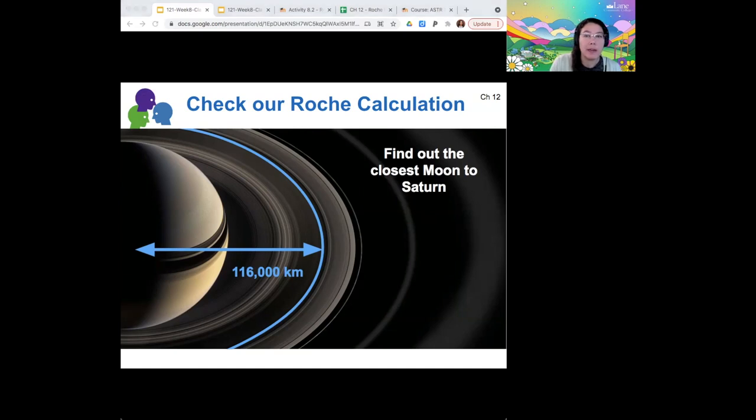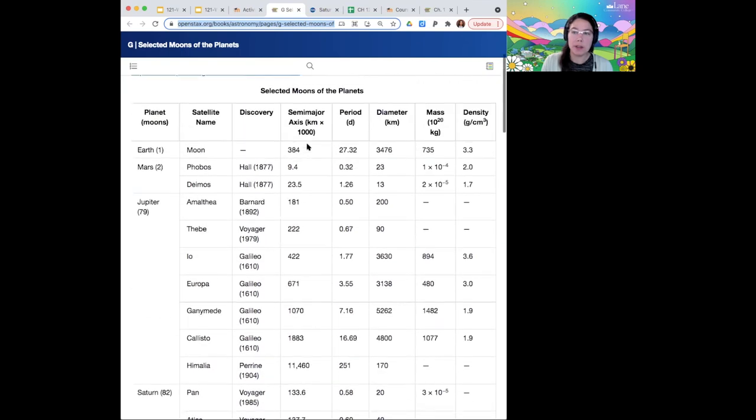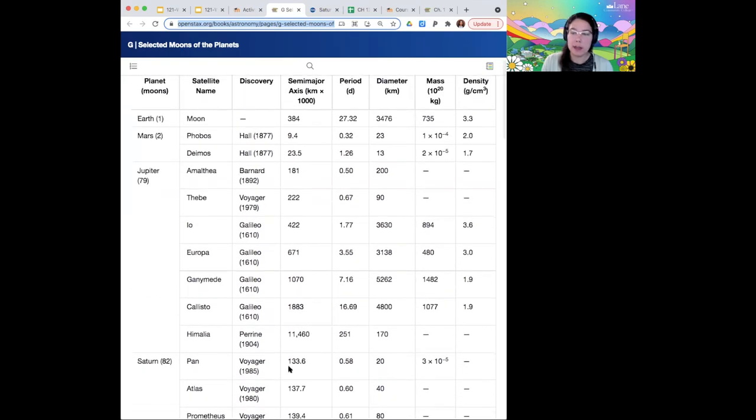So if you can just Google and find out what is the closest moon to Saturn. So Pan's orbital distance is 133,000 kilometers. These are listed in thousands of kilometers and its diameter is only 20 kilometers. So it's a small moon, but it's still outside of our Roche limit.